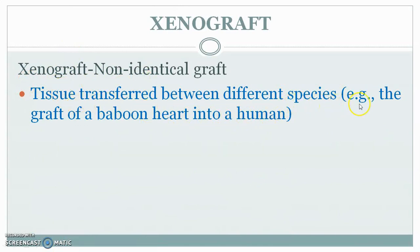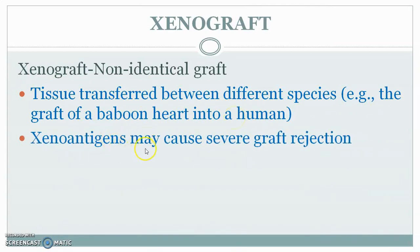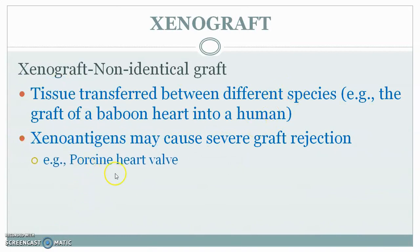An example of xenograft is the graft of a baboon heart into a human being. This can cause severe graft rejection because the antigens are coming from an entirely different species. Another example is porcine heart valve — the heart valve of a pig transplanted into a human being.